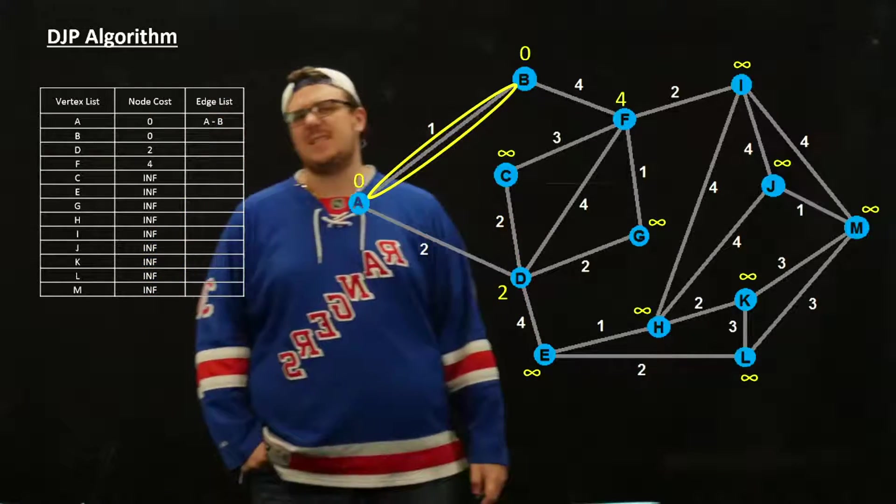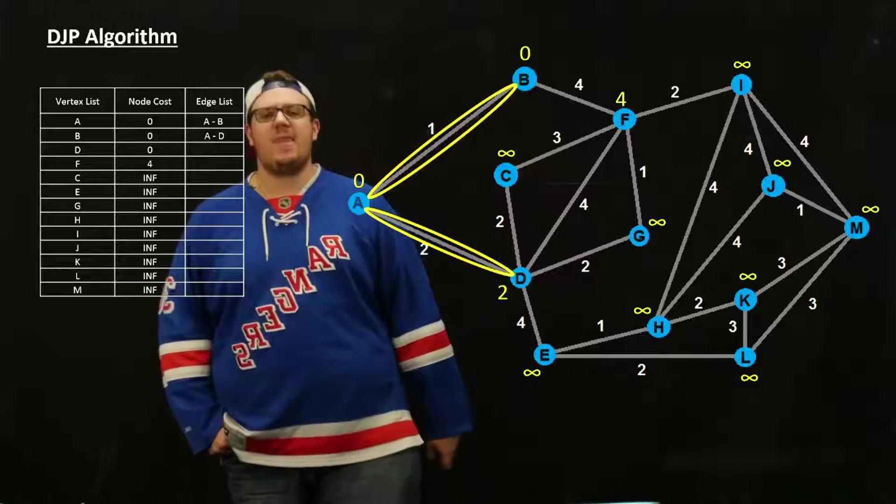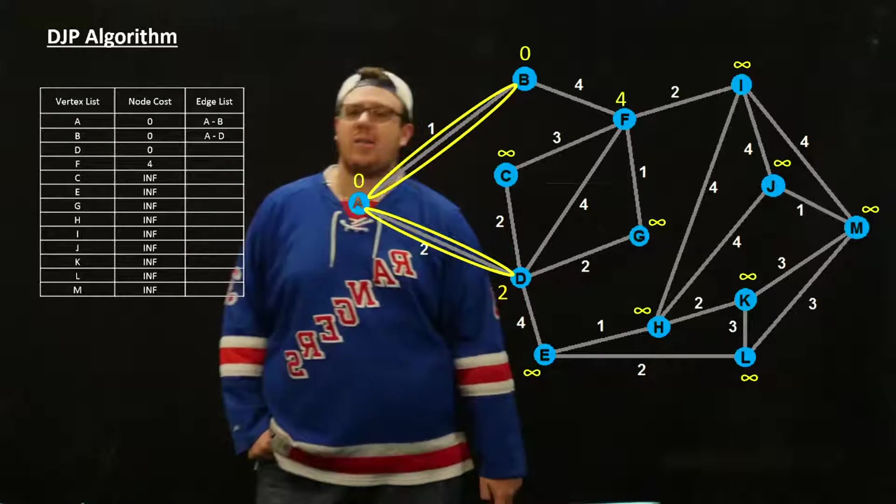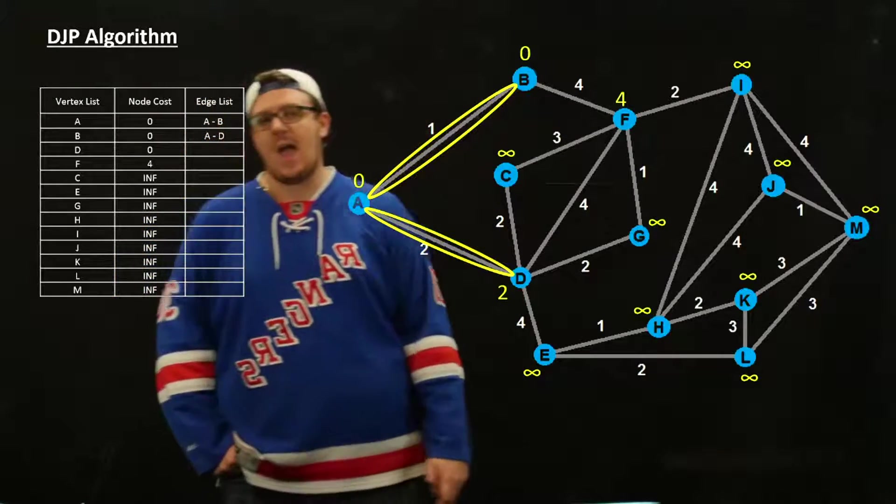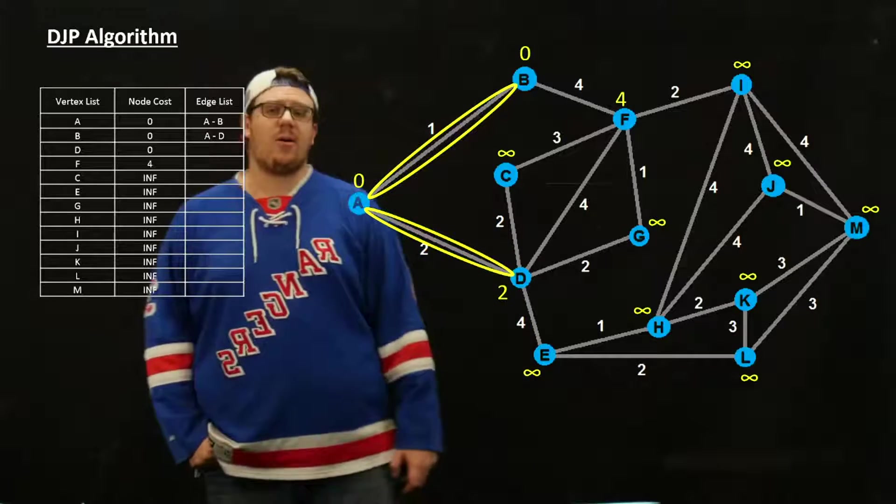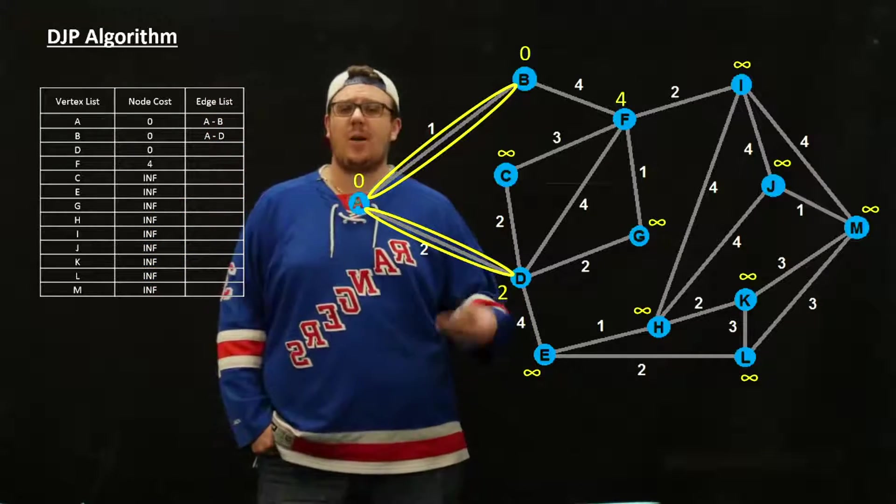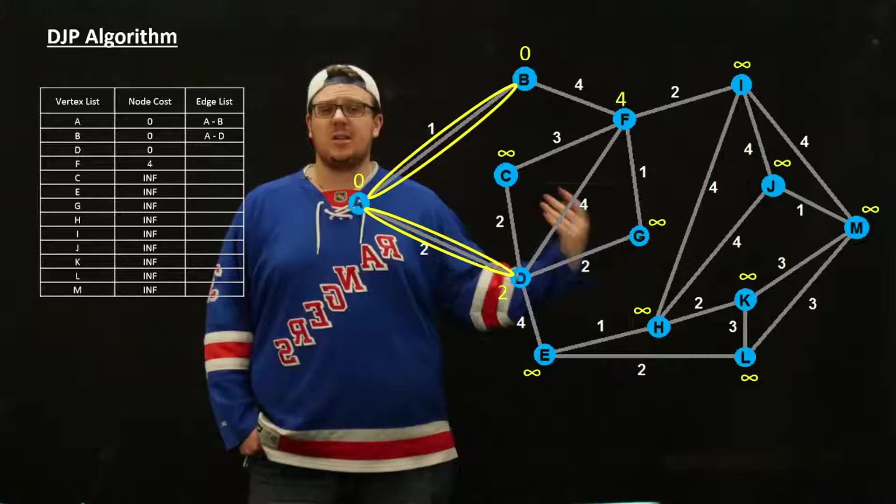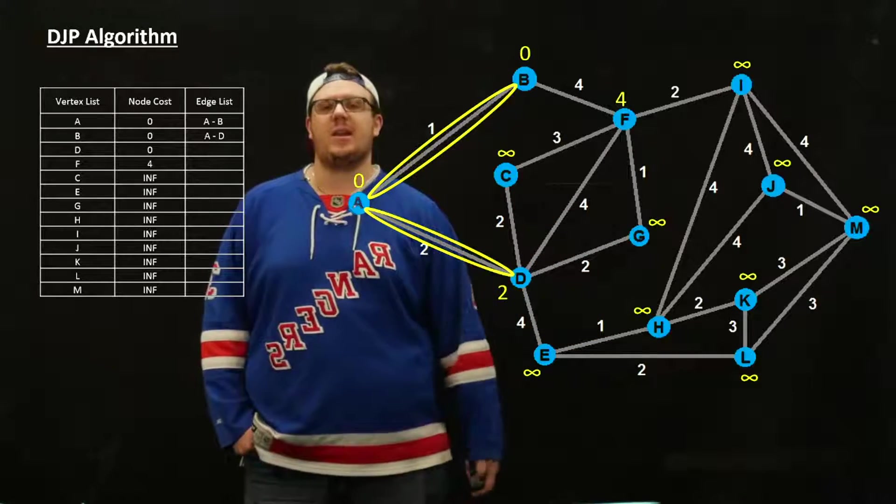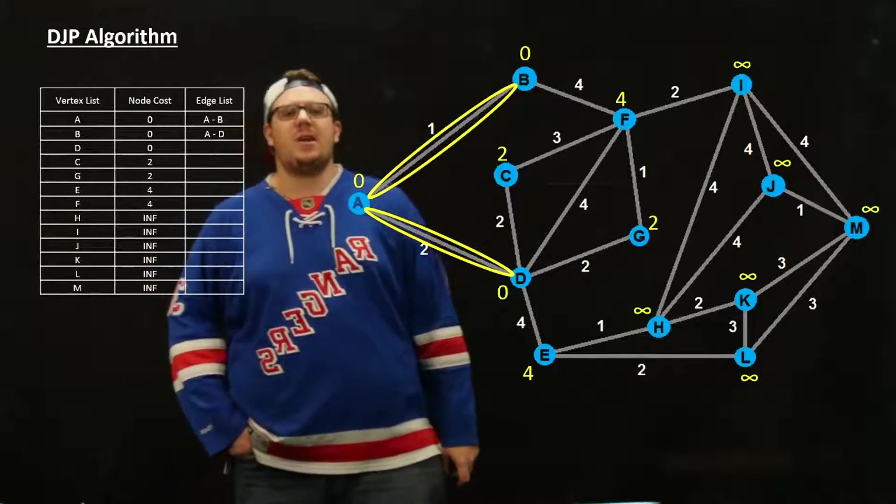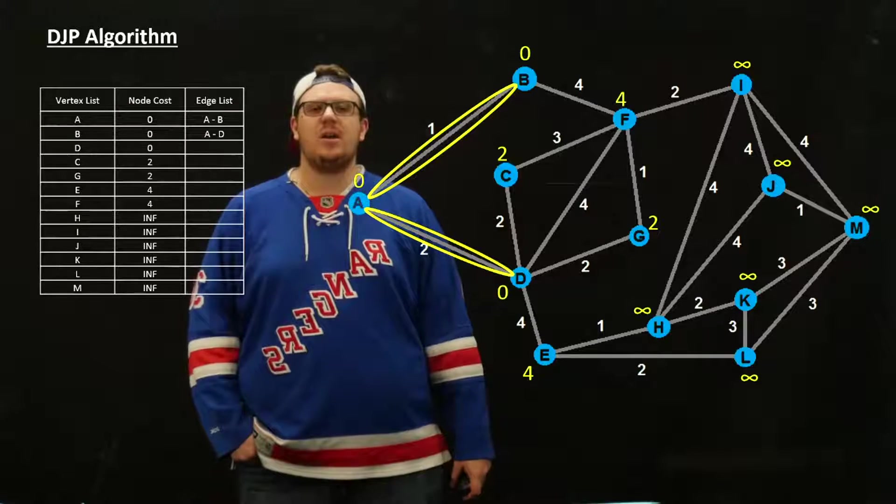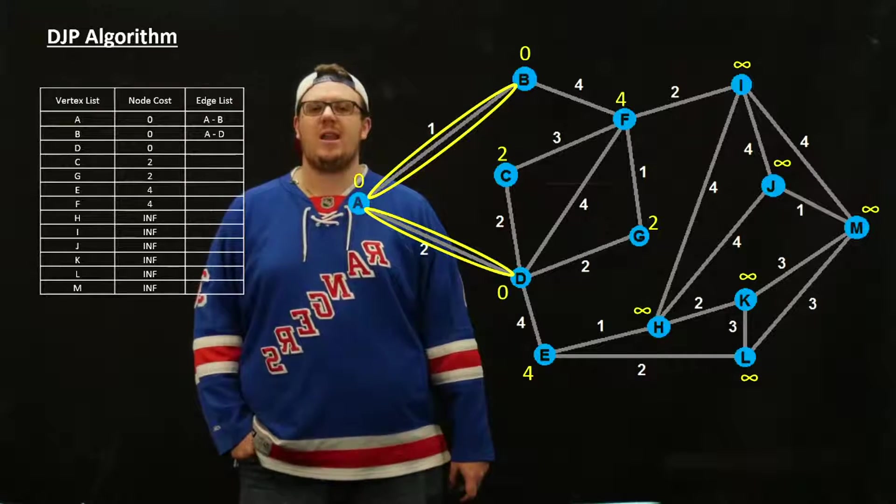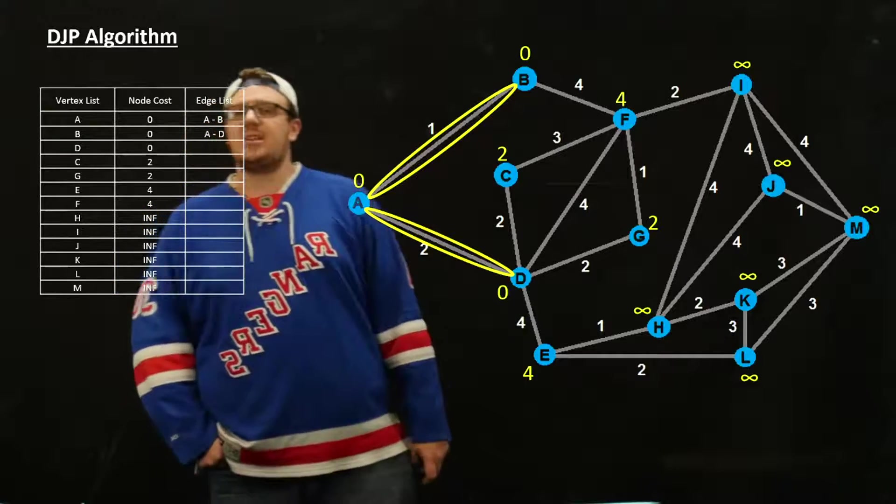Next one closest is D, so we're going to add that. We're going to update D to zero, and then we get to add C, G, and E to our possibility. We're going to update the node costs there because they're no longer infinity. They are 1 away from something in our tree. So C is 2, G is 2, and E is 4. At this point, it's a toss-up between whether we want C or G.